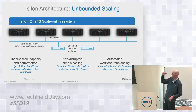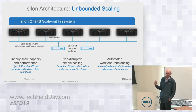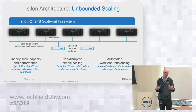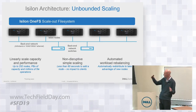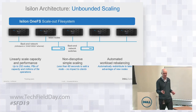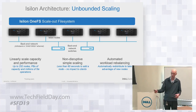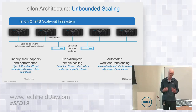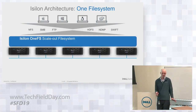One other thing to point out: let's say we started with three nodes. Assume one node is used for protection, so files are two-thirds efficient. As we expand the cluster, that increases in efficiency. So large media files — as customers add nodes for more capacity and performance, they also get more storage efficiency at the same time.